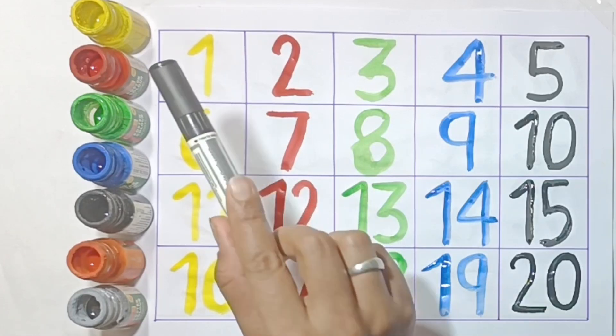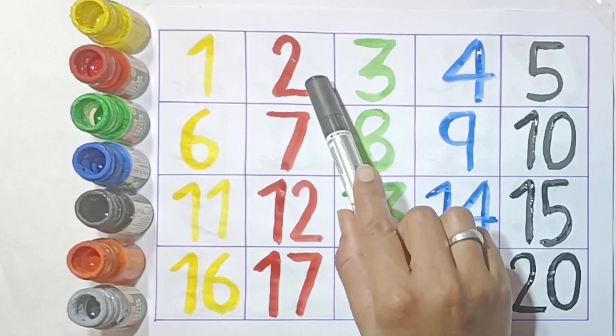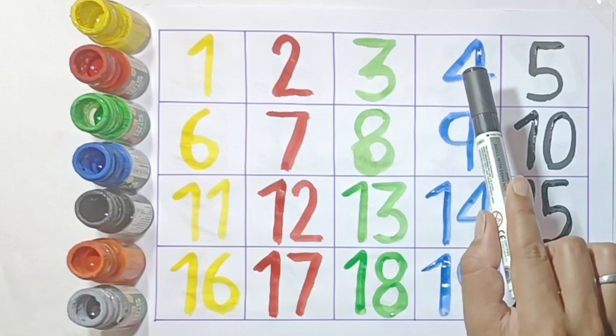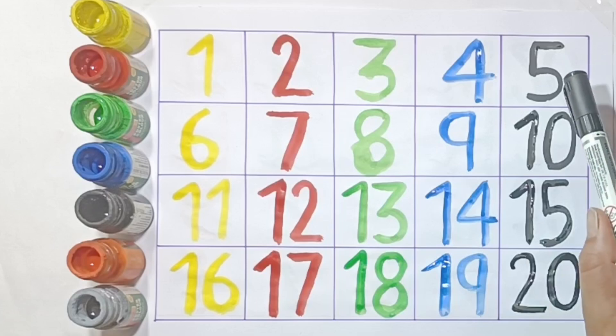1. O-N-E, 1. 2. T-W-O, 2. 3. T-H-R-E-E, 3. 4. F-O-U-R, 4.